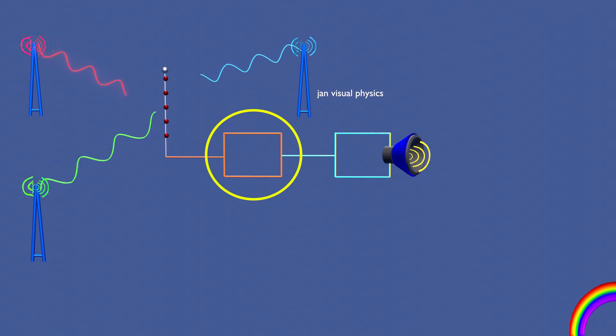The tuner allows only the desired frequency to pass, suppressing all others.